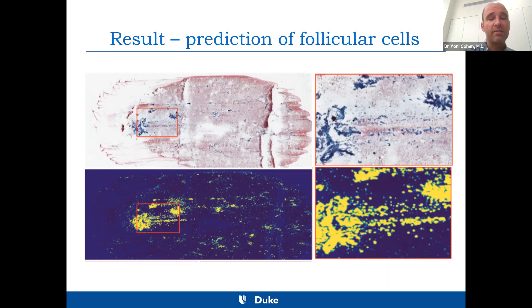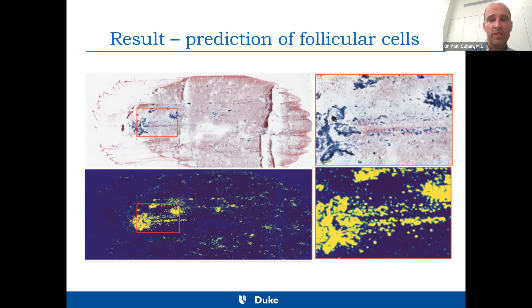Based on these ROIs, the algorithm picks the top 100 ROIs, and based on those 100 ROIs it makes a final prediction whether or not the whole slide is benign or malignant — again, a number between 0 and 1.